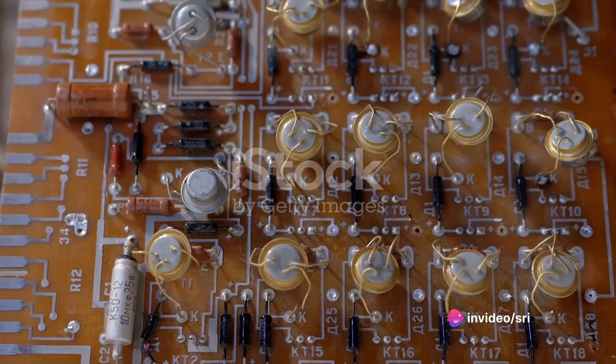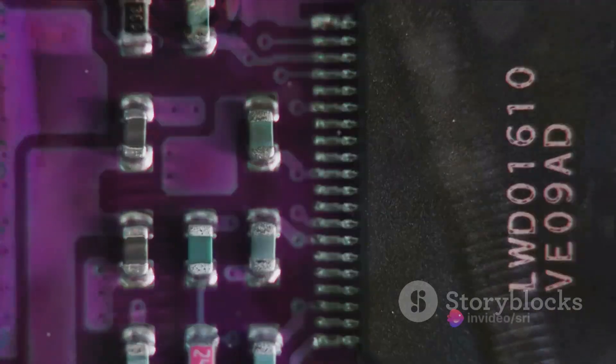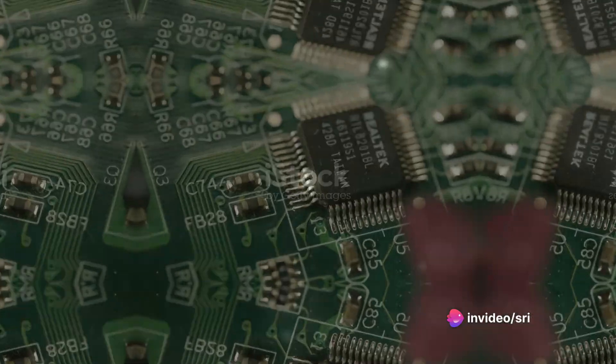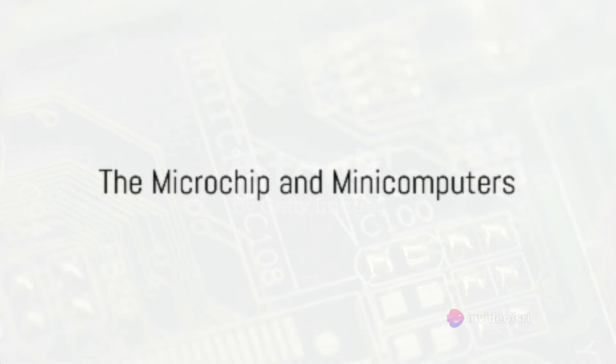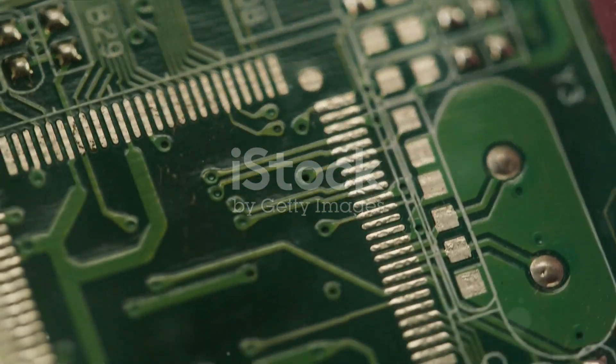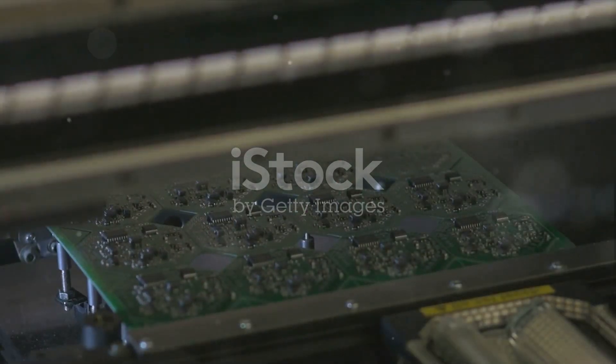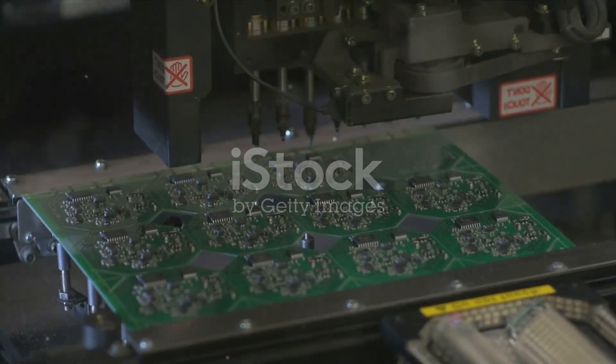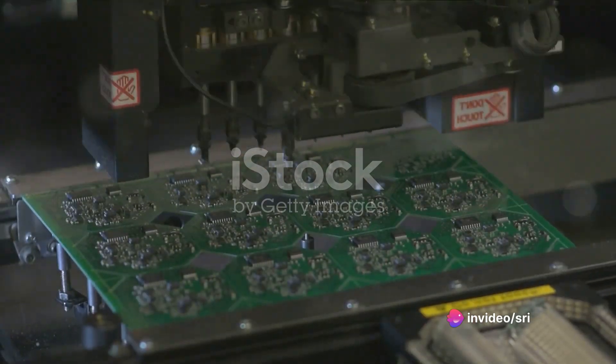The 1950s brought the advent of the transistor, which revolutionized the computer industry. Smaller and more efficient than vacuum tubes, transistors led to the development of smaller, faster, and cheaper computers. This was the era of the first commercially available computer, the UNIVAC, signaling the dawn of the computer revolution. As the 1960s rolled in, the integrated circuit took center stage, packing thousands of transistors into a small space and leading to the birth of the minicomputer.